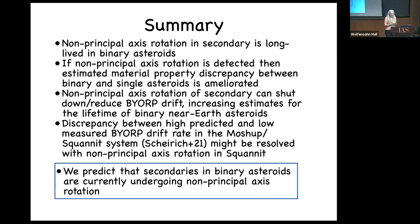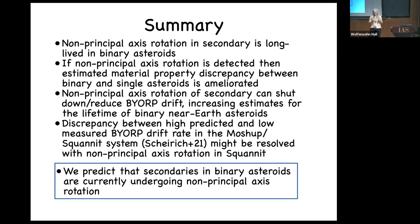To conclude: non-principal axis rotation in a secondary of a binary is long-lived. If it's detected, the material property discrepancy between binary and single asteroids is less bad — it may still be real, but the problem is ameliorated. Non-principal axis rotation can reduce or shut down BYORP, extending the lifetimes of binary asteroids. Right before our paper was posted, the DART team proposed that the missile impact would excite non-principal axis rotation in the secondary, but we're predicting it's already in a non-principal axis rotation state — a completely different conclusion, though we agreed on the importance of this type of phenomenon.